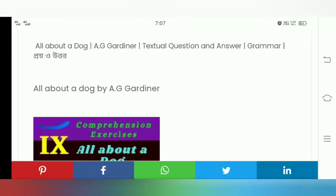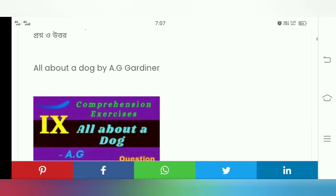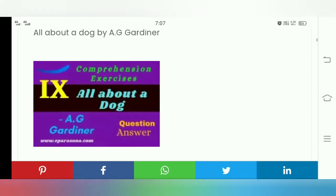Today I will discuss the textual questions and answers for 'All About a Dog,' a story written by A.G. Gardiner. The comprehension exercises and textual question answers, I will completely discuss today. So please pay attention to 'All About a Dog' by A.G. Gardiner - textual question answers.